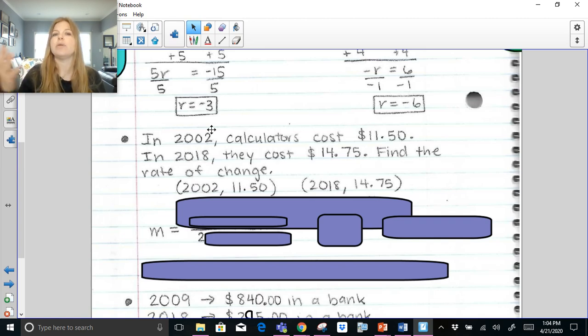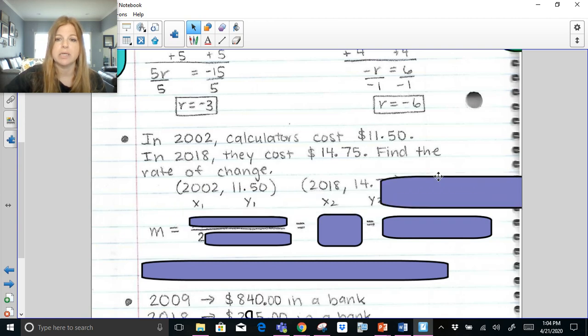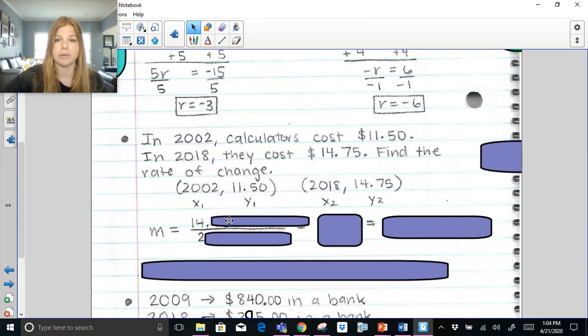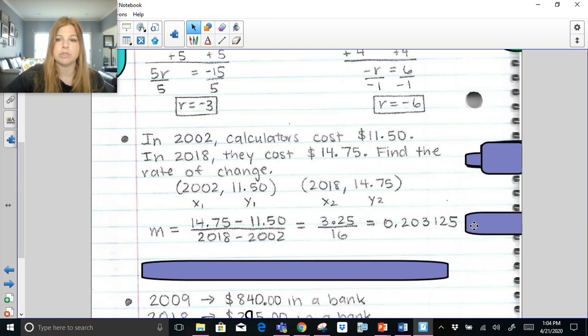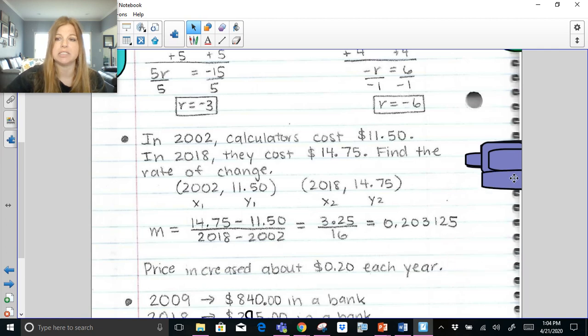So the years, the time, those are always going to be your x values. The cost, that's your dependent. That's the value that can always fluctuate. That's always going to be your y value. And they naturally just make these ordered pairs. So now if I label them x sub 1, y sub 1, x sub 2, y sub 2, and I substitute them into my slope formula. Y sub 2 minus y sub 1. So $14.75 minus $11.50 over 2018 minus 2002. Becomes $3.25 over 16. And if I divide that out, I end up getting about this amount. I did cut it off to around about $0.20 each year.